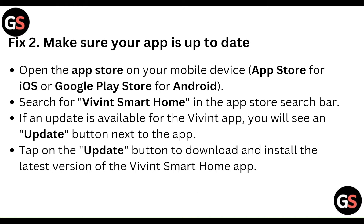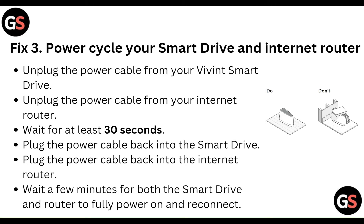Make sure the app is up to date. Open the App Store on your mobile device — App Store for iOS and Google Play Store for Android. Search for Variant Smart Home in the app store search bar. If an update is available, update the Variant app.